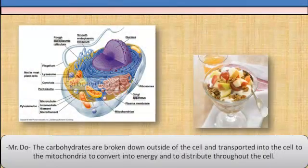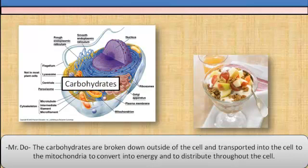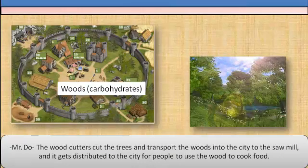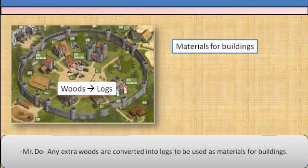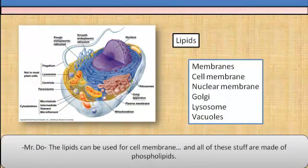The carbohydrates are broken down outside of the cell and transported into the cell to the mitochondria to convert into energy and to distribute throughout the cell. The wood cutters cut the trees and transport the wood into the city to the sawmill, and it gets distributed to the city for the people to use the wood to cook food. Any extra carbohydrates are converted into lipids. The lipids can be used to build membranes — cell membrane, nuclear membrane, Golgi, lysosome, and vacuoles. All of these structures are made of phospholipids.